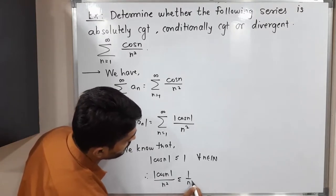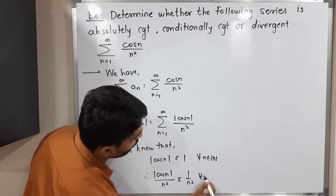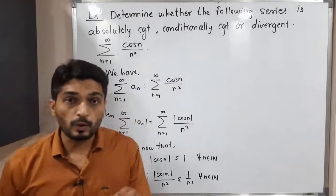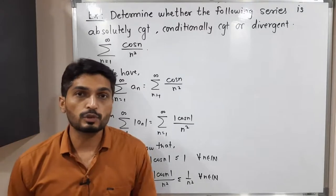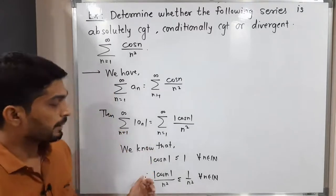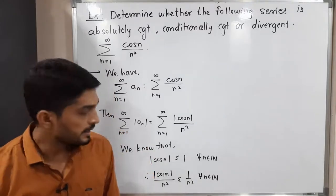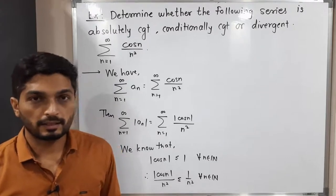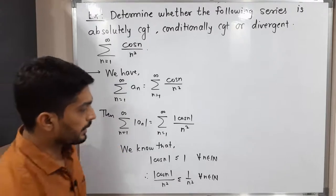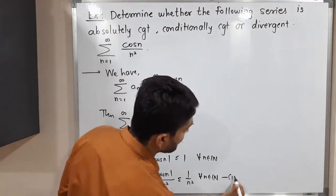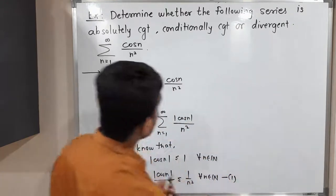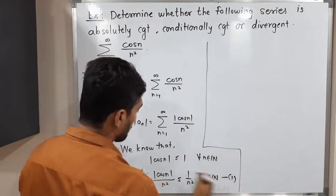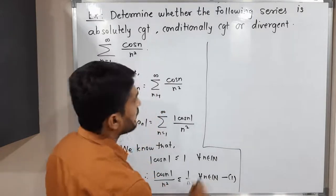So mod cos n upon n squared is less than or equal to 1 upon n squared, for all n belonging to the set of natural numbers. Since n squared is a positive real number, dividing both sides maintains the same inequality. This is a very important inequality — let me call it inequality (1).